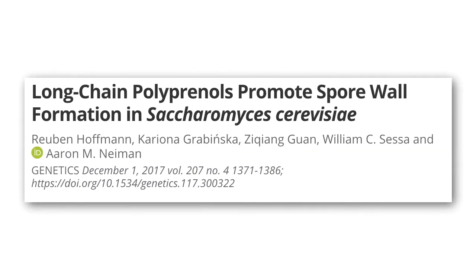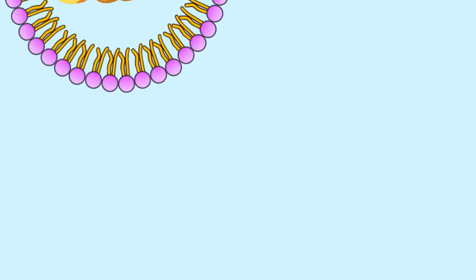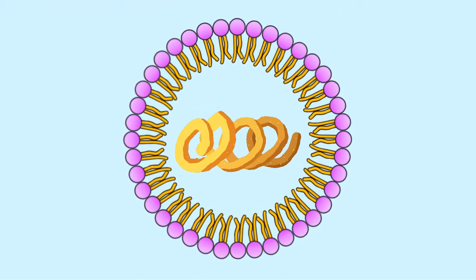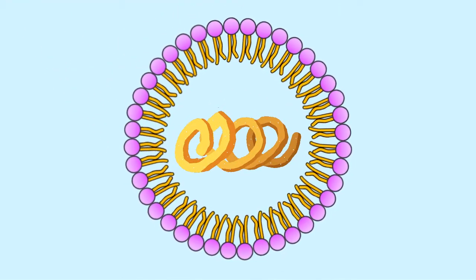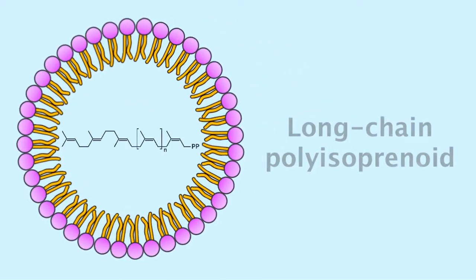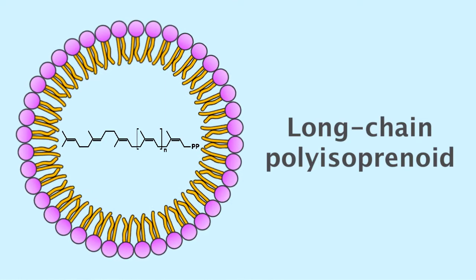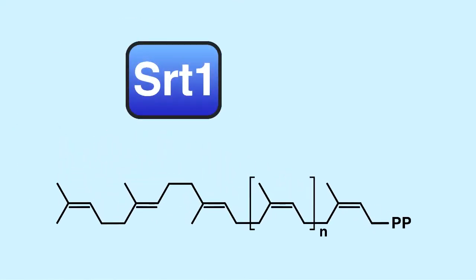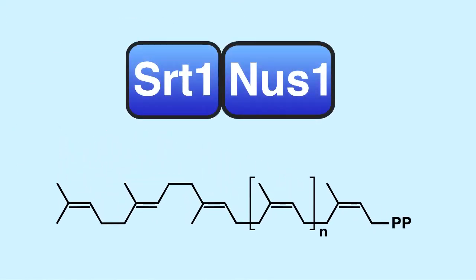In a recent genetic study, Hoffman and co-workers showed that spore wall lipid droplets have a surprise component too. No, it's not a curly fry. Instead, this greasy droplet has long-chain polyisoprenoids made by the protein SRT1 and its partner, NUS1.